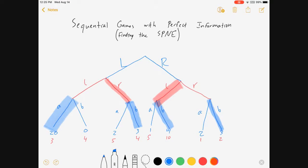And so now we can combine these two sub-games into a bigger game. The initial choice of left or right. Blue knows that if blue goes left, there will be an eventual payoff of 3. But if blue goes right, there will be an eventual payoff of 4. And so blue will choose to go right.